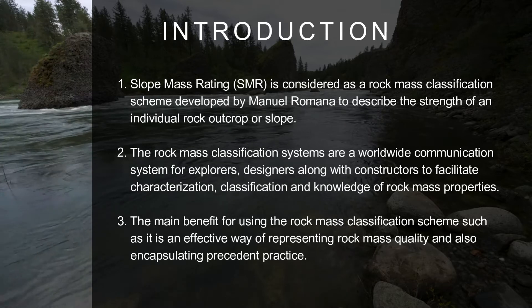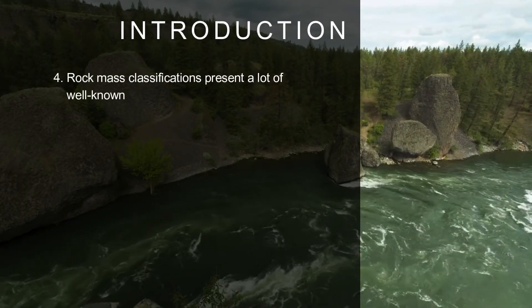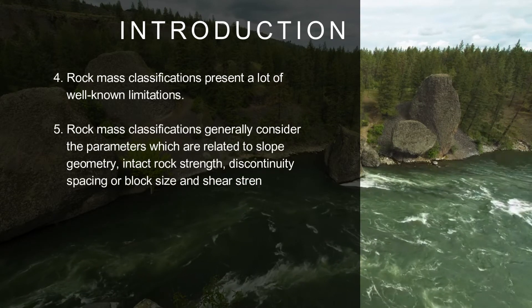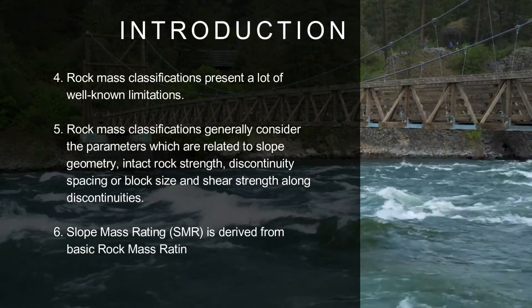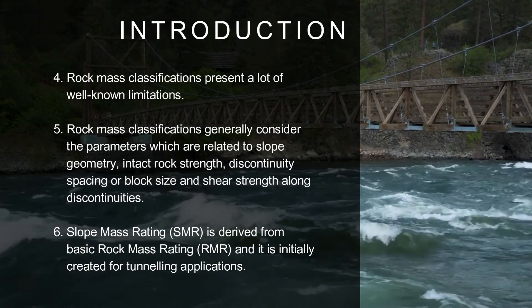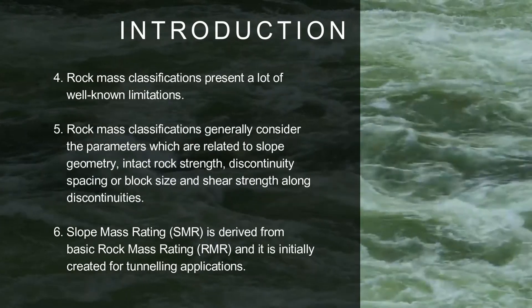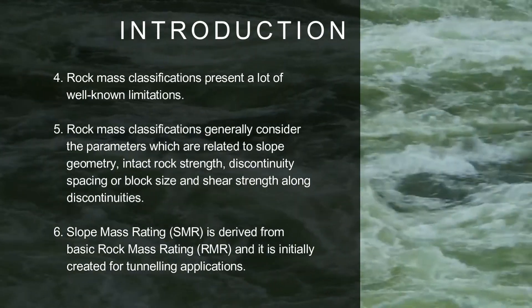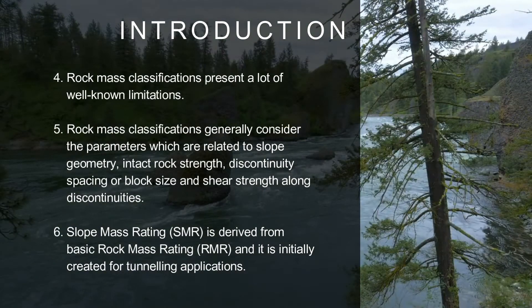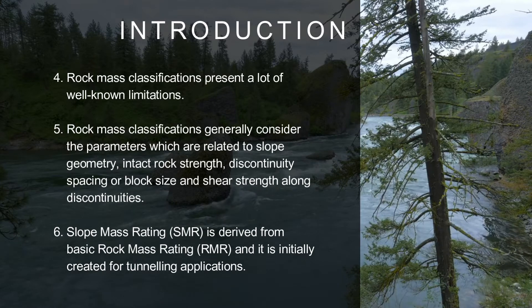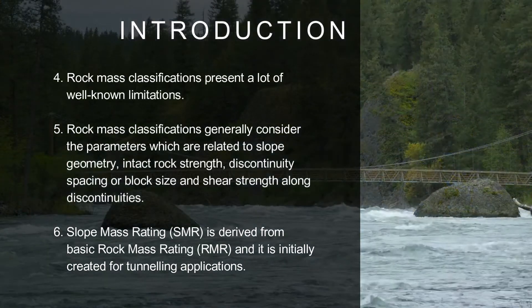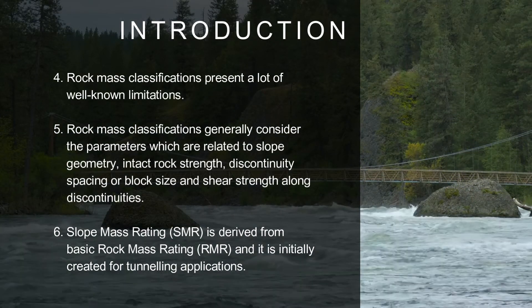Rock mass classification systems also encapsulate preceding practice. Rock mass classification presents a lot of well-known limitations. They generally consider parameters related to slope geometry, intact rock strength, discontinuity spacing or block size, and shear strength along discontinuities. Slope Mass Rating is derived from basic Rock Mass Rating and was initially created for tunneling applications.